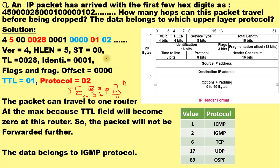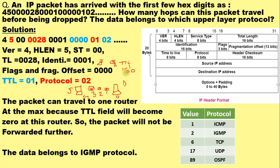In this case, the TTL field is set to 1, meaning the packet can reach at most 1 router. At that router, TTL is decremented by 1, becoming 1 − 1 = 0. So the packet can travel to only 1 router at the max, and since TTL becomes 0 at that router, the packet will not be forwarded further. This answers the second question and the example is complete.